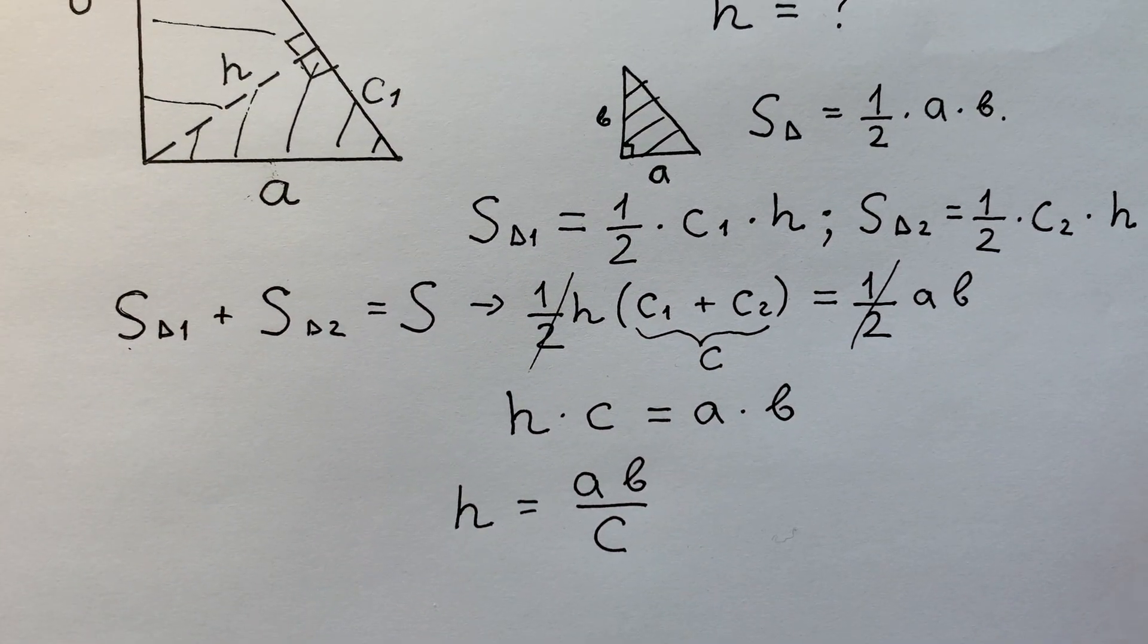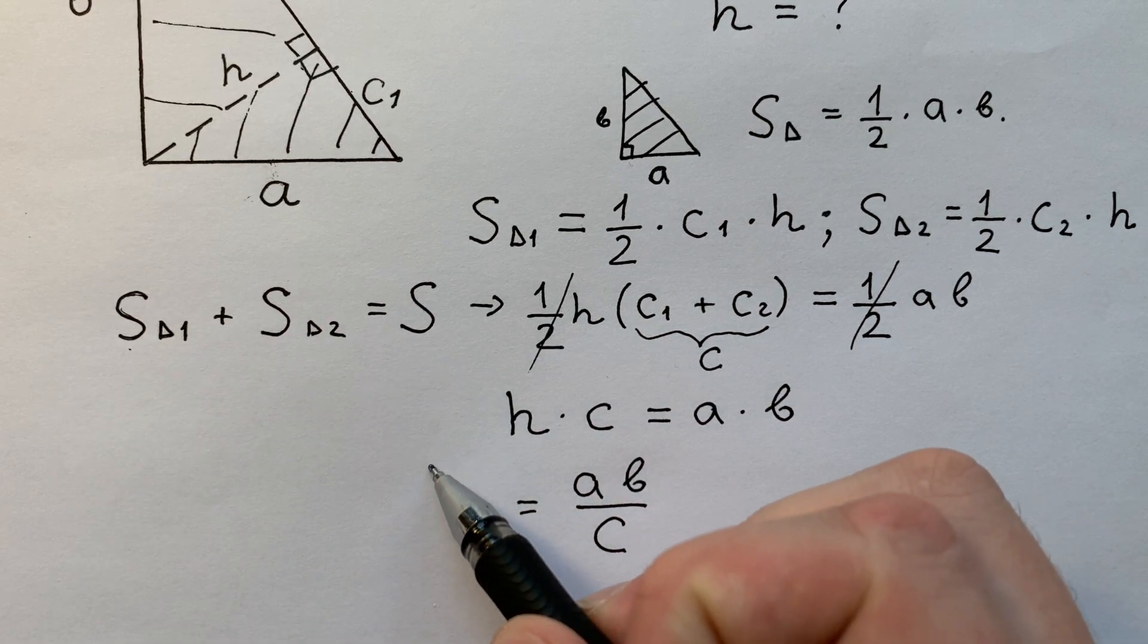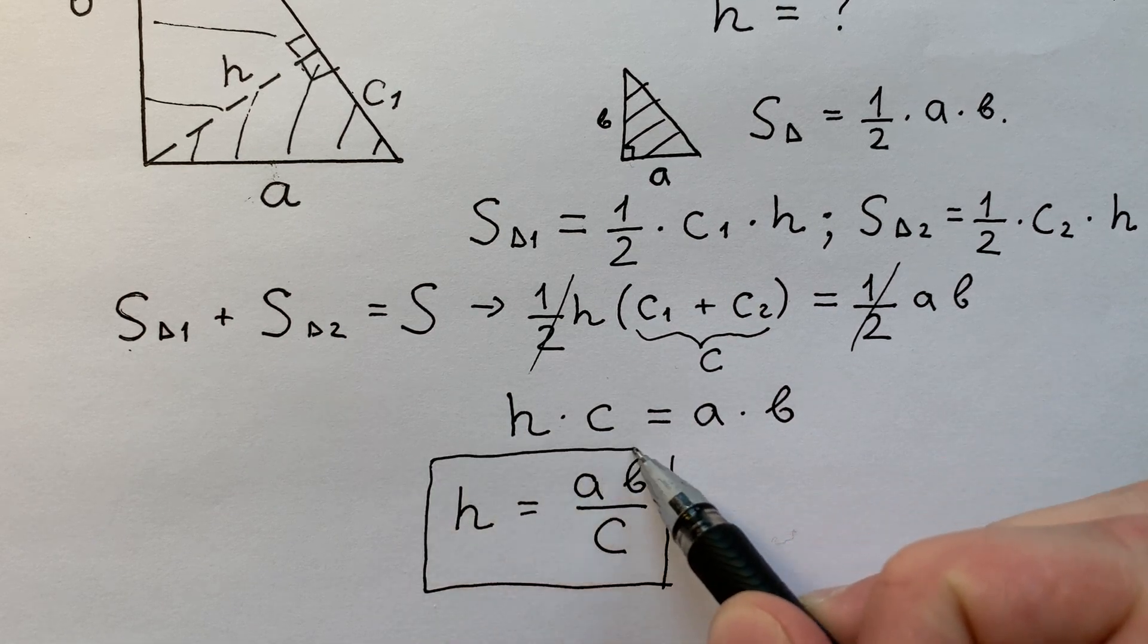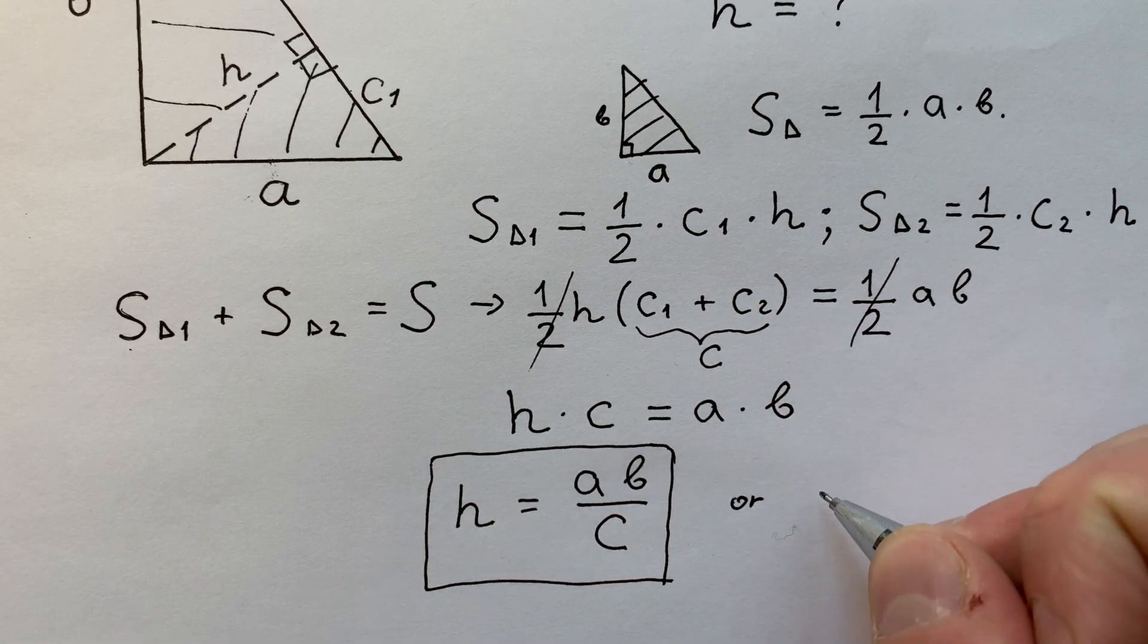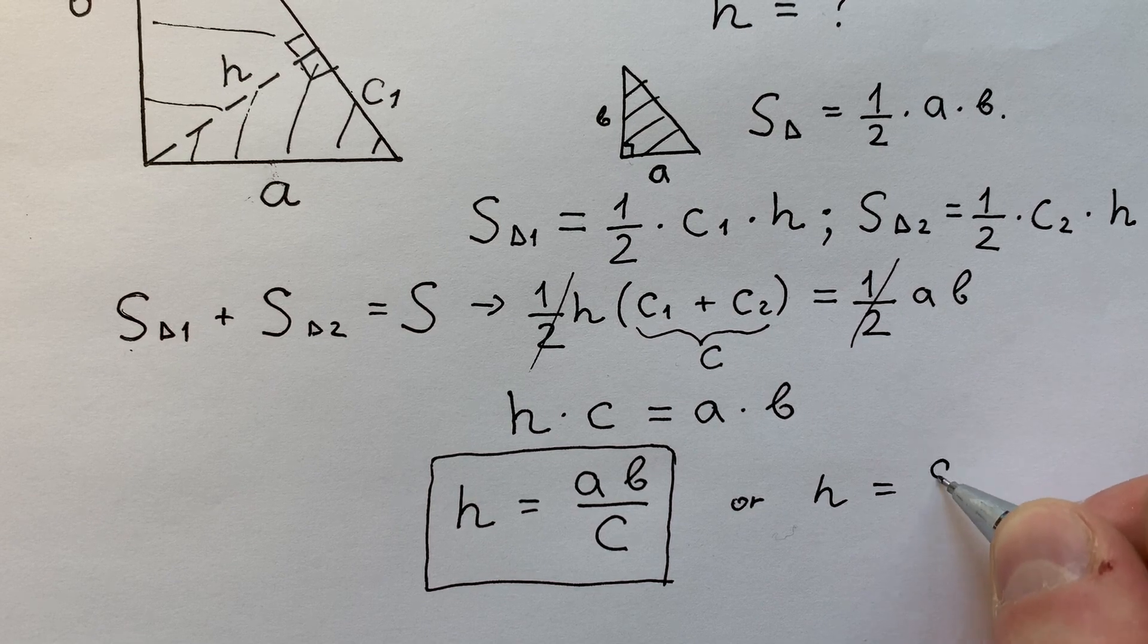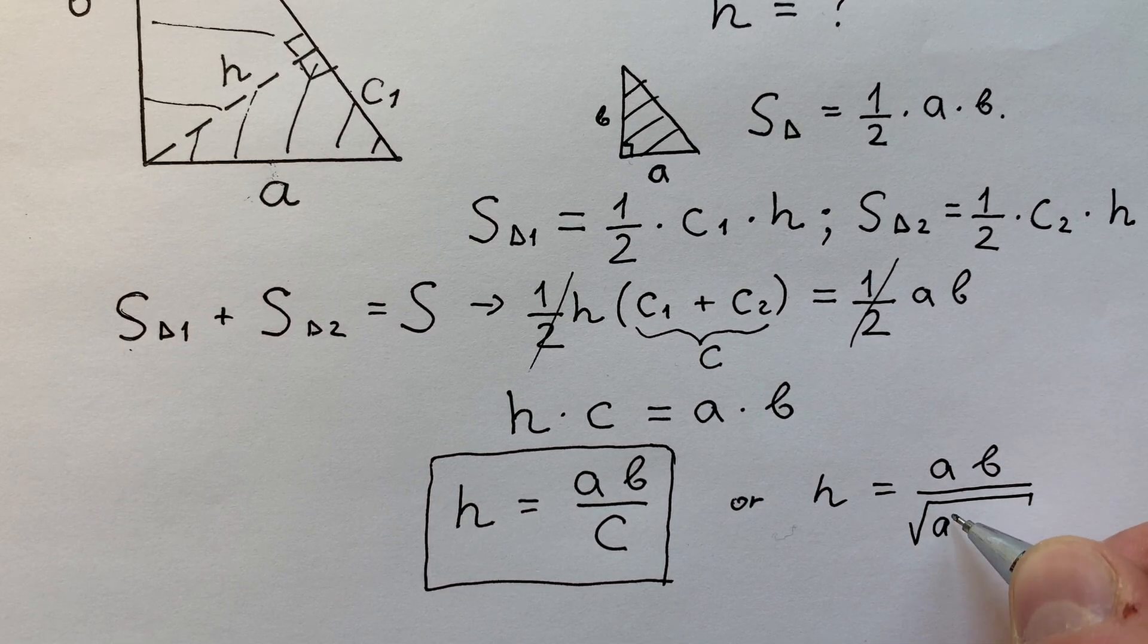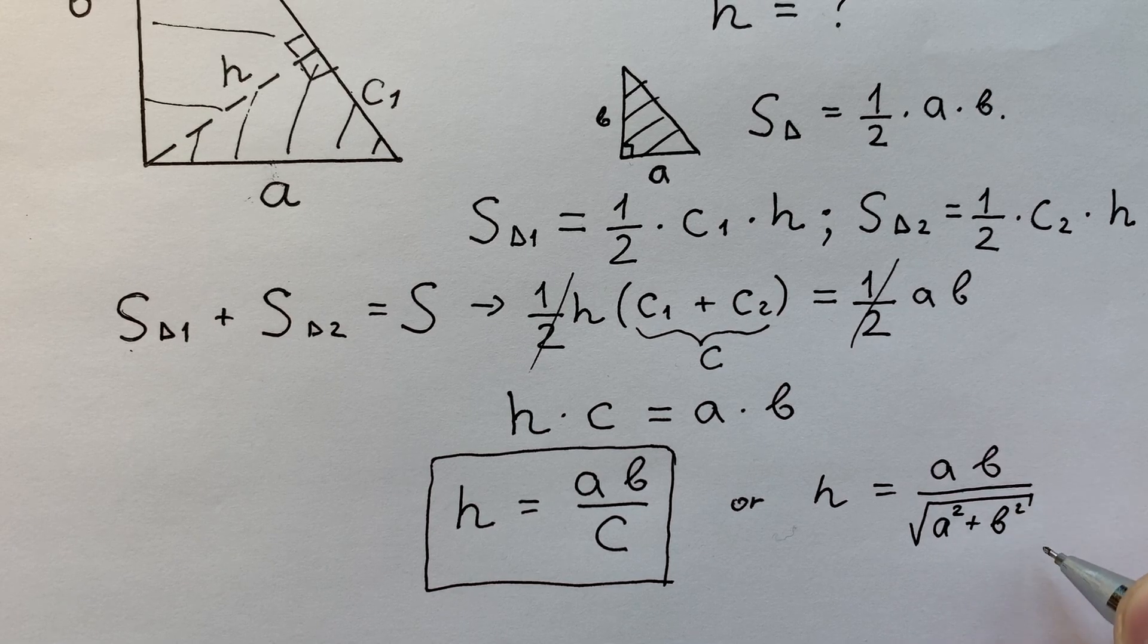Of course C we already know, as we know A and B. So this is the formula for the height of the right triangle. Or H equals A times B divided by the square root of A to the power of 2 plus B to the power of 2.